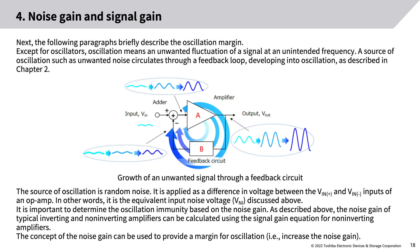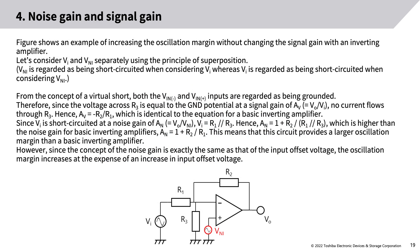Except for oscillators, oscillation means an unwanted fluctuation of a signal at an unintended frequency. A source of oscillation such as unwanted noise circulates through a feedback loop, developing into oscillation. The source of oscillation is random noise applied as a difference in voltage between VN+ and VN− inputs — in other words, the equivalent input noise voltage VNI. It is important to determine the oscillation immunity based on the noise gain. The noise gain of typical inverting and non-inverting amplifiers can be calculated using the signal gain equation for non-inverting amplifiers. The figure shows an example of increasing the oscillation margin without changing the signal gain with an inverting amplifier.